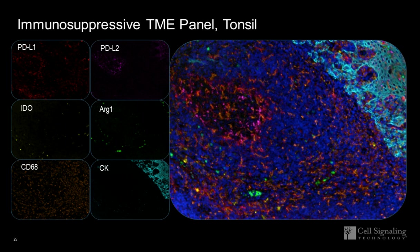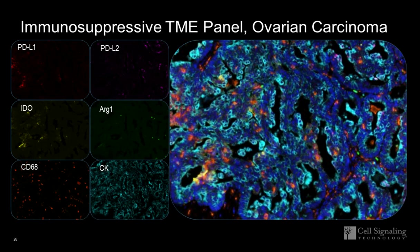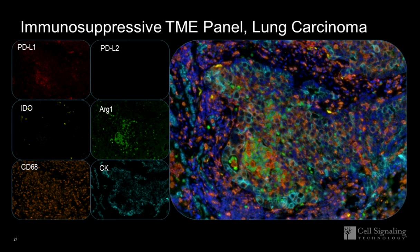Looking at single channel images: on the tonsil, all markers are broken out into individual channels. On an ovarian carcinoma, there is notably more IDO expression compared to Arginase. On the lung carcinoma, the pattern is reversed — a higher expression of Arginase-1 shown in green versus IDO shown in yellow.